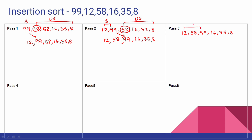Now 3 elements are sorted, 3 are unsorted. Next is 16. We compare 99 - move it to side. Then 58 - move it to side. Then 12 - 12 is greater than 16, so move. We create a gap and place 16. Then remaining elements are 35 and 8.